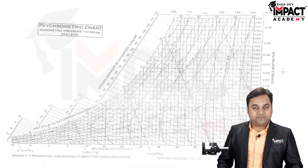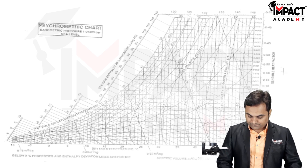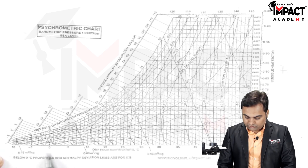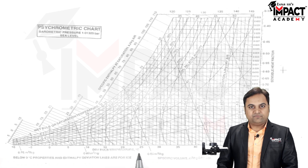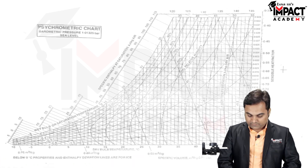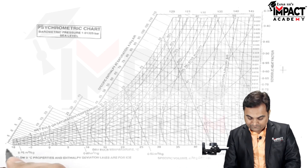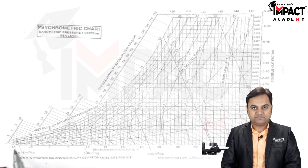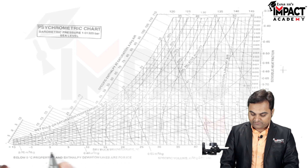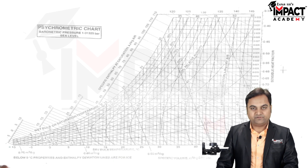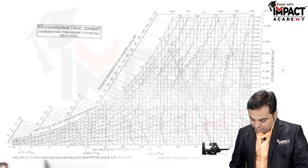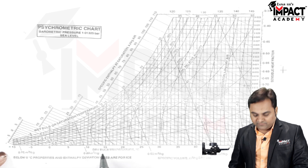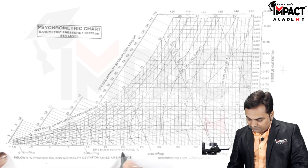There are various things given in this chart which I'll explain one by one. This horizontal axis represents the dry bulb temperature of air in degrees Celsius, starting from minus 10 degrees Celsius and going up to 55 degrees Celsius. These horizontal points represent the dry bulb temperature (DBT) for any given air.